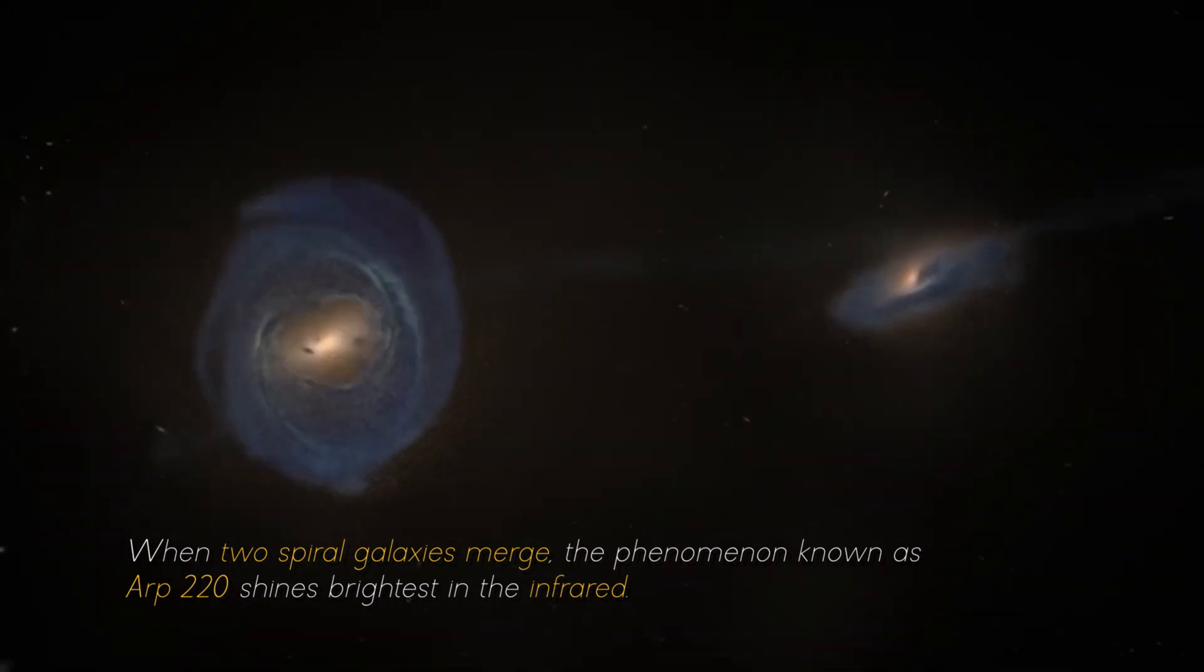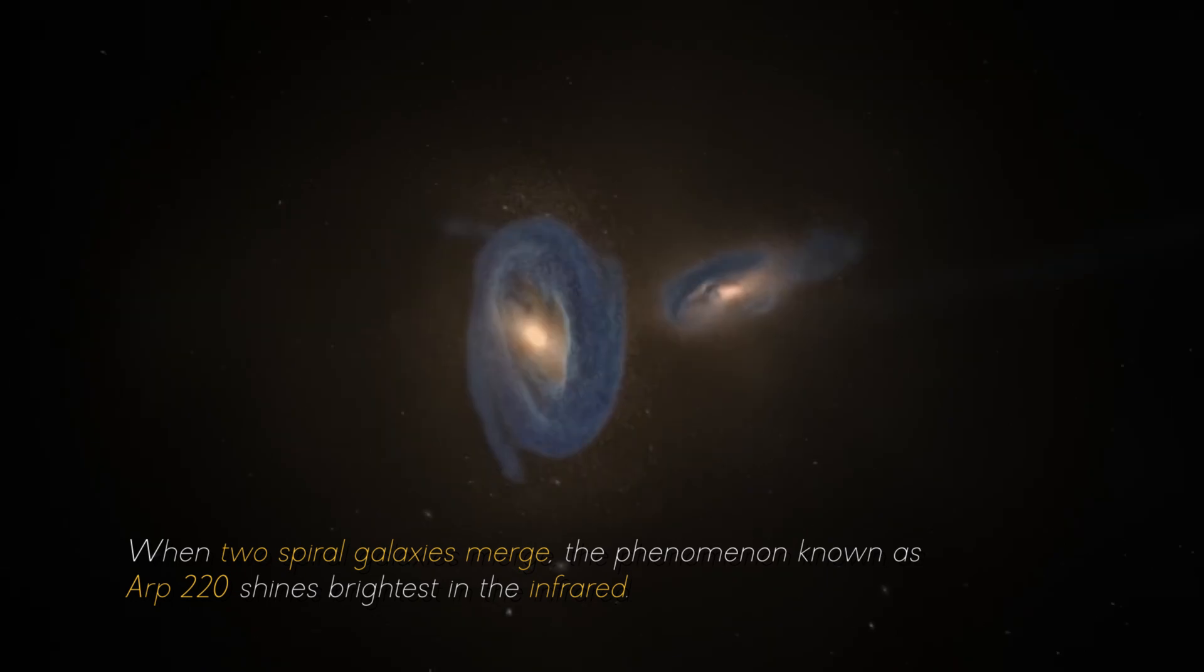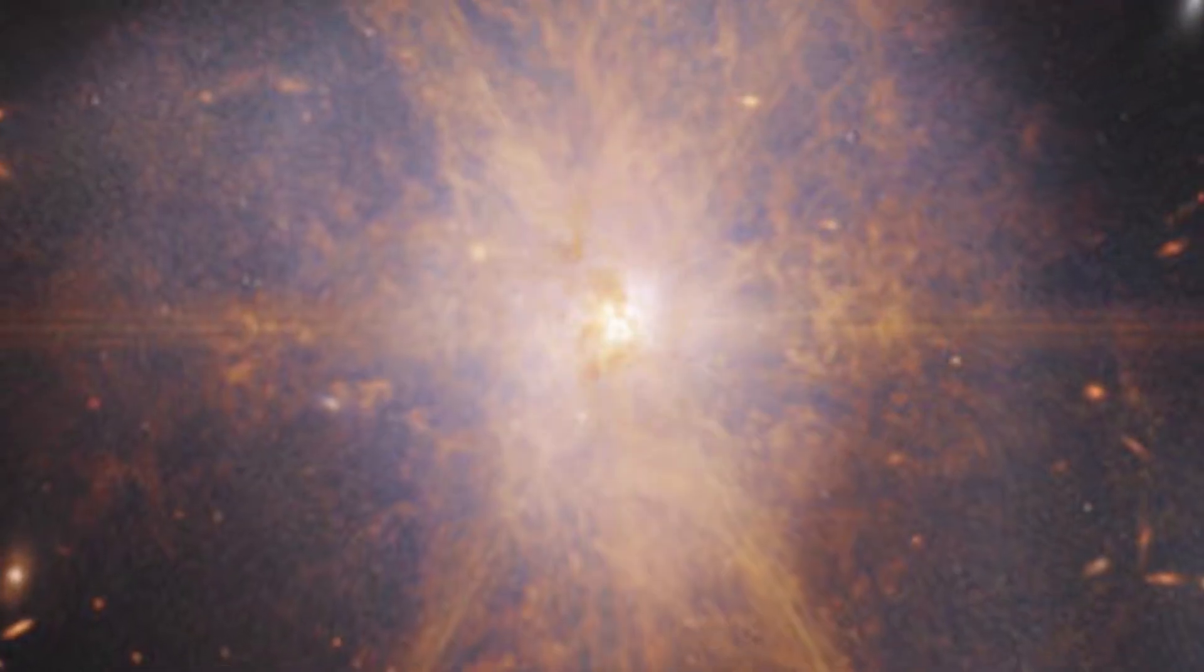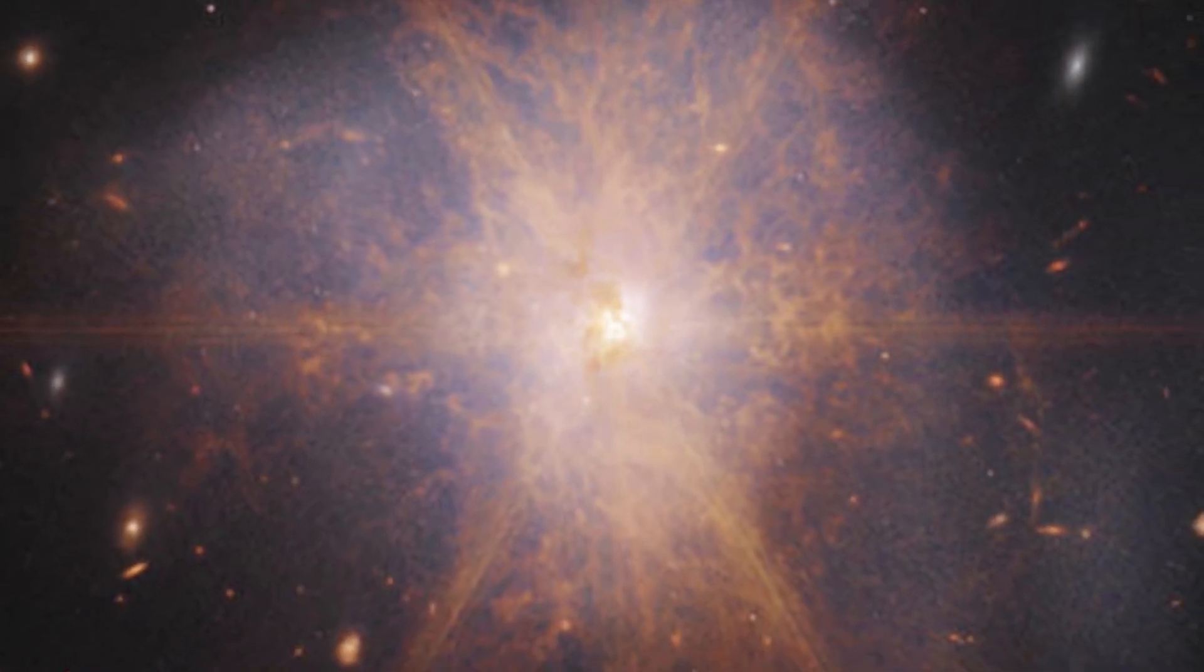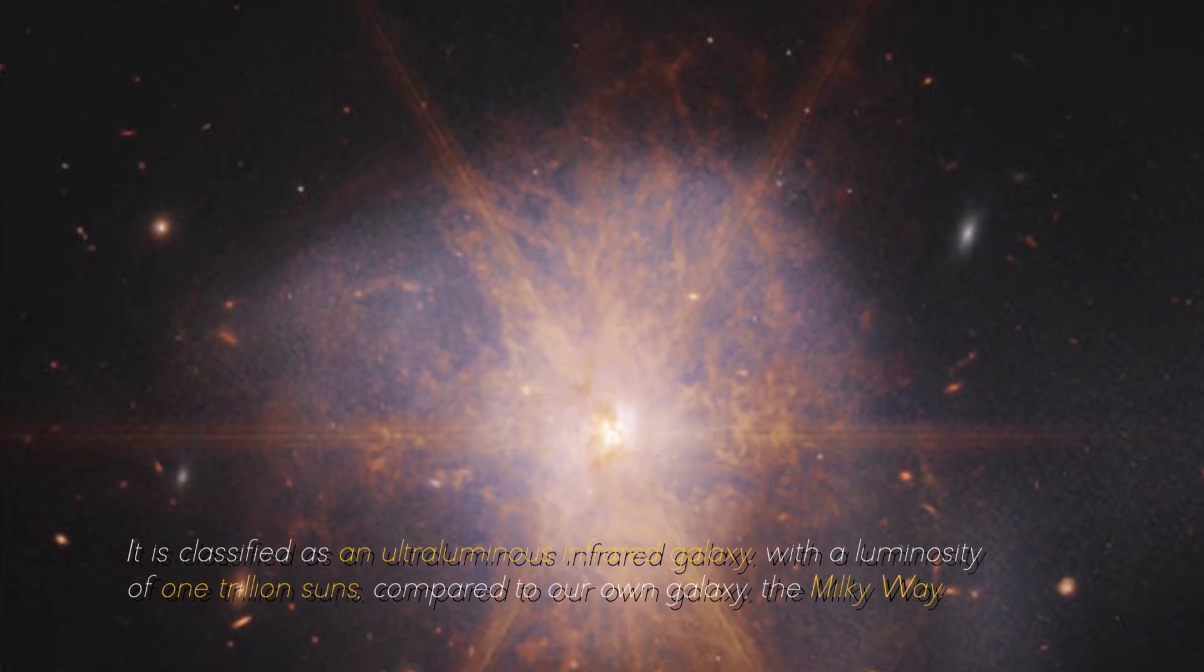When two spiral galaxies merge, the phenomenon known as ARP 220 shines the brightest in the infrared, making it perfect for observation by the James Webb Space Telescope.